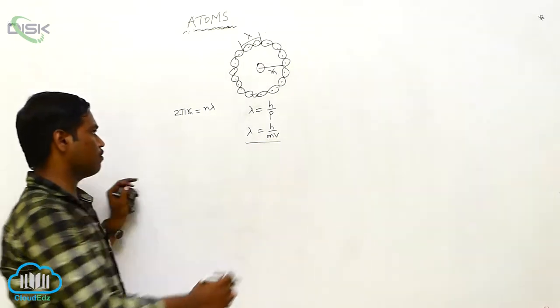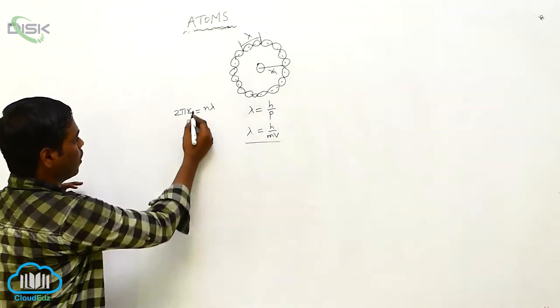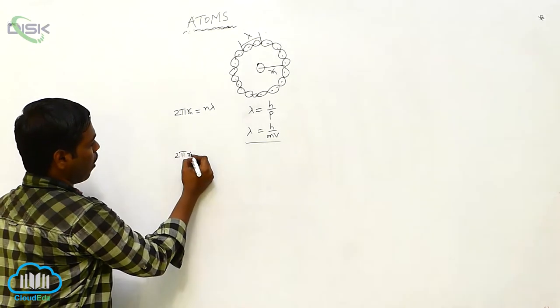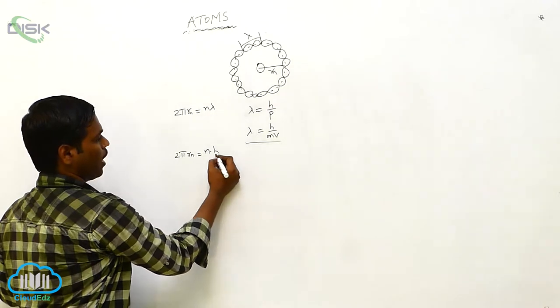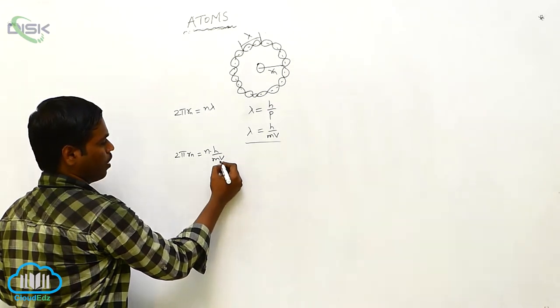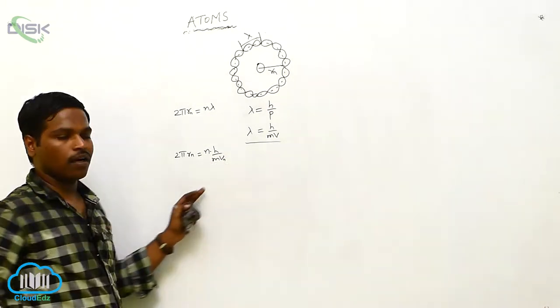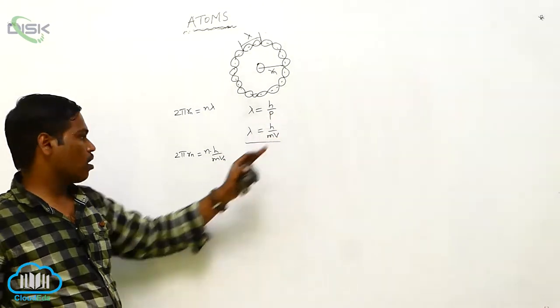Substituting this de Broglie wavelength into this equation, 2πrn is equal to n into lambda value h by mv. Here, vn is the speed of the electron.